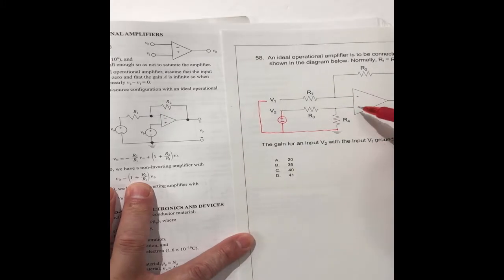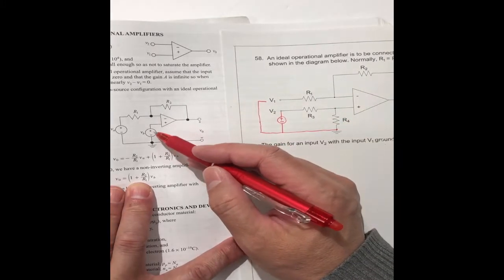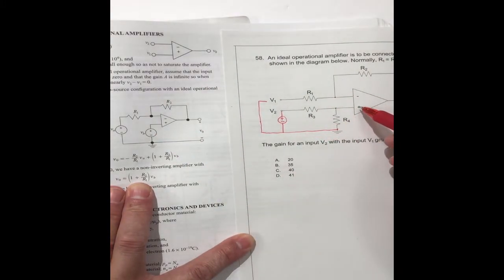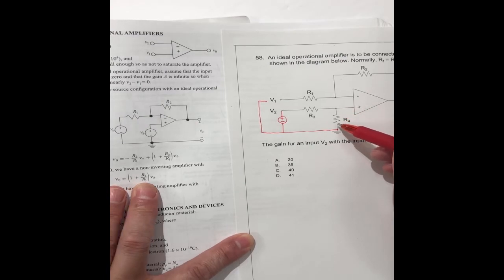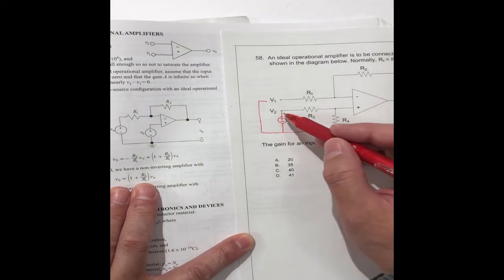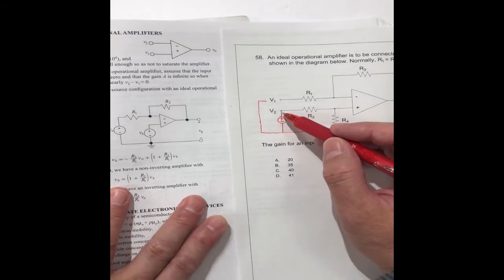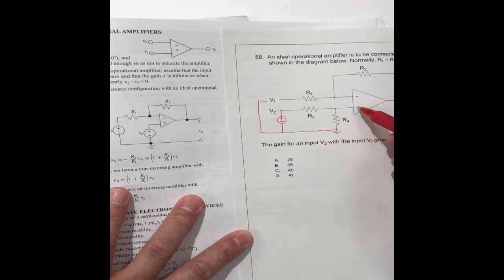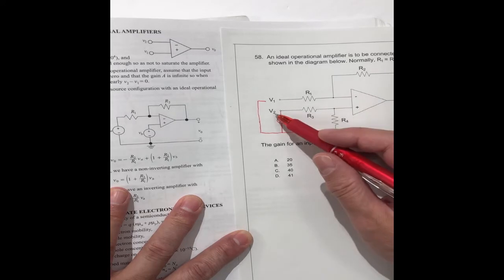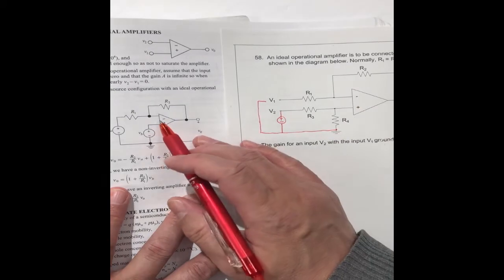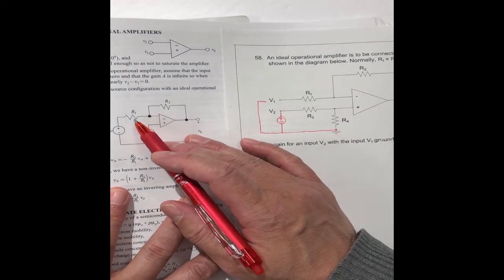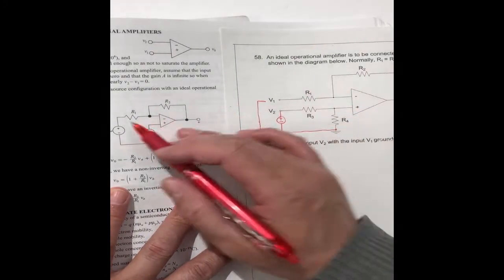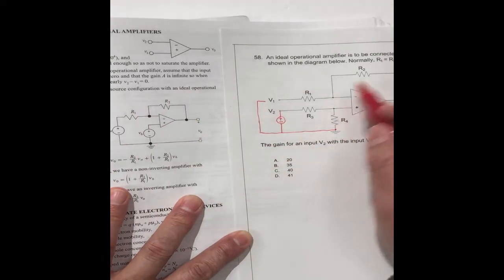It's similar. You see positive. The positive connects to here. This positive is connected to a resistor. It's part of the input, this input V2. This point is part of the V2. And this negative, negative to here. It's R1, R2. R1, R2. Exactly the same.